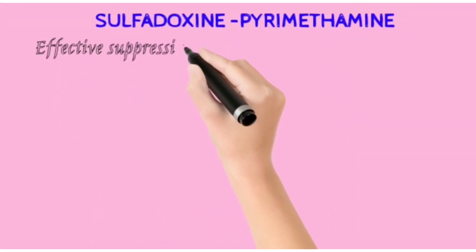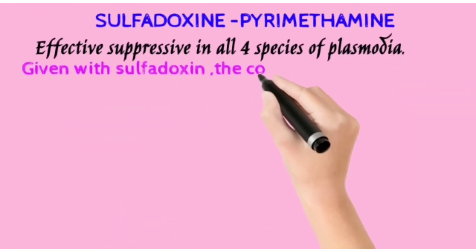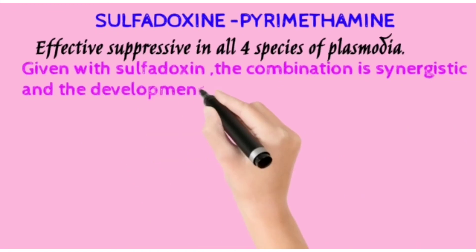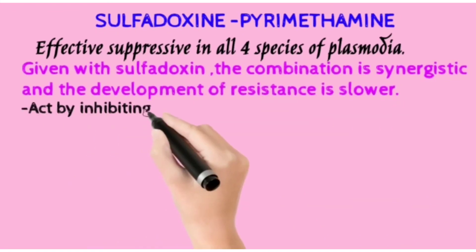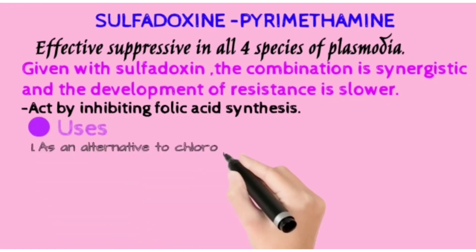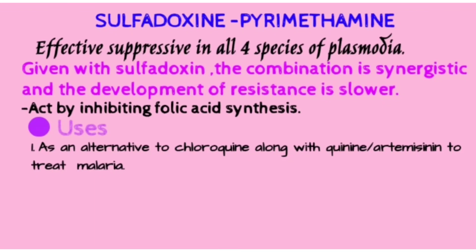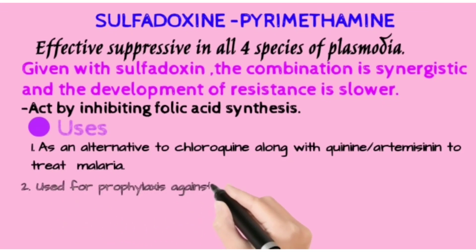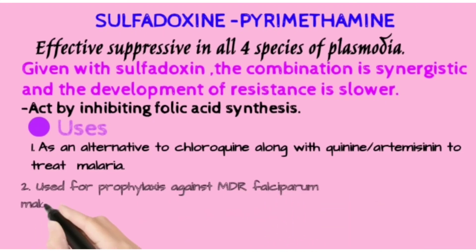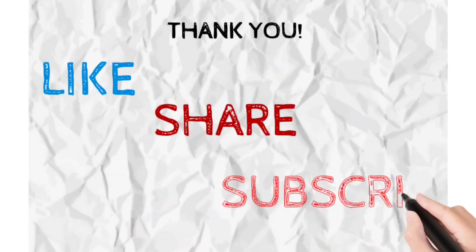Sulfadoxine is a very effective suppressive against all four species of Plasmodium and is given in combination with Pyrimethamine. This combination is synergistic and the development of resistance is also slower. It acts by inhibiting folic acid synthesis. It is used as an alternative to chloroquine and also along with quinine. Ready-to-read notes are available on the Instagram page.